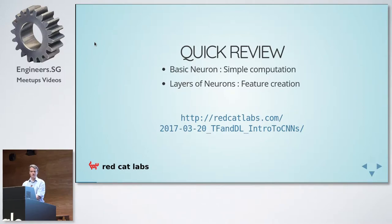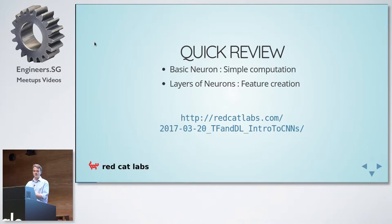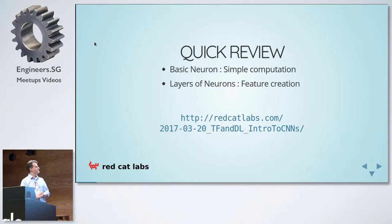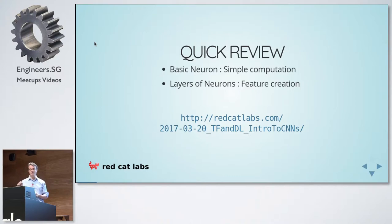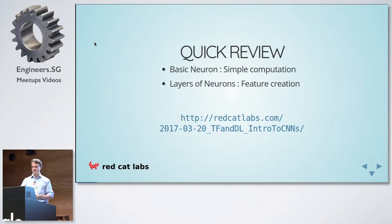Quick review: a basic neuron does simple computation; layers of neurons can do feature creation. If you go to Red Cat Labs slash P, you can see this presentation on your own laptop. You can also look at previous slides from previous talks — they're all online. When I say simple, this is a single neuron. What we have are some inputs — the X's could be humidity, precipitation, sunshine, temperature — and the output is: is it winter?